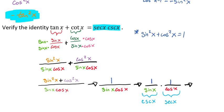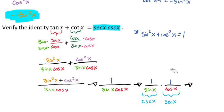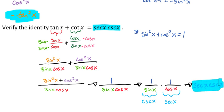Now, 1 over sine of x is actually cosecant of x, and 1 over cosine of x is secant of x. We can simply switch their order, because in multiplication 2 times 3 is the same as 3 times 2. So we can write this as secant of x times cosecant of x, which is exactly what we wanted the right-hand side to equal. We are now done verifying this identity.